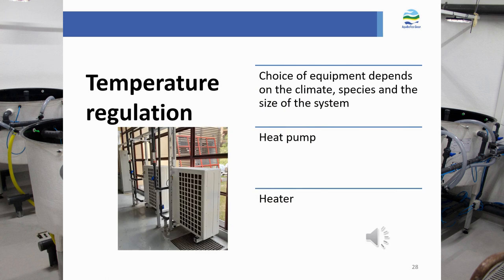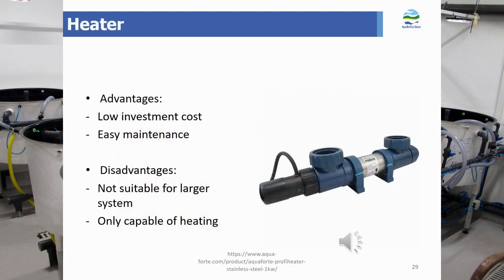Temperature regulation in a RAS may be necessary depending on the climate and the cultured species. Equipment selection also depends on system size. Heat pumps, plate heat exchangers, and heaters are the most commonly used options. Heaters are one of the simplest solutions — comparatively cheap and easy to operate and maintain — and are particularly useful in small systems. However, they are not suitable for large systems, require multiple units, and are only capable of heating, not cooling the water.